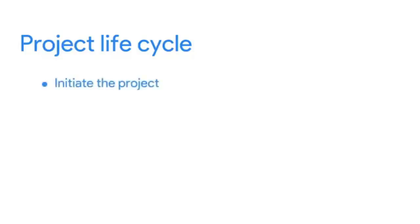Now that we've discussed the project lifecycle, we're going to explore some of the different tasks that match up with each lifecycle phase. The project lifecycle phases are: initiate the project, make a plan, execute and complete tasks, and close out the project. It's important to call out that the name or tasks for each phase might change depending on the type of project or organization. At Google, we use a mix of different project management methods, but regardless of the method, all projects share a lot of the same tasks needed to get the job done.